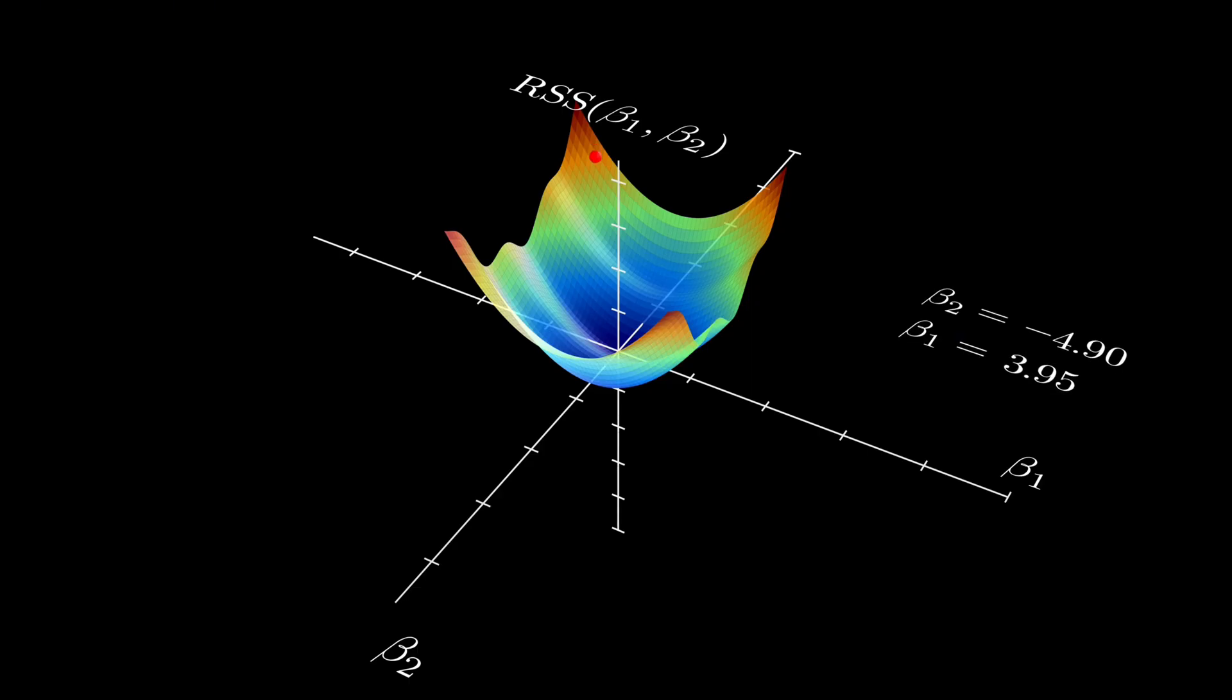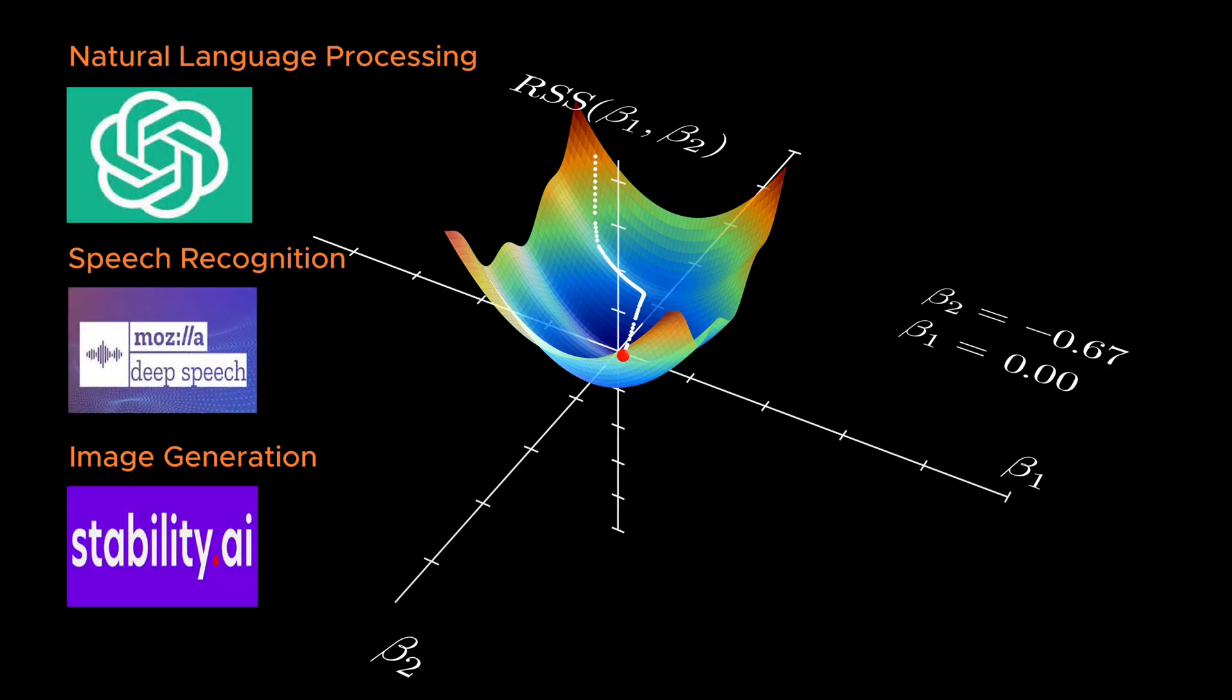What you're seeing is a red dot rolling down a curved surface, seemingly finding its way to the lowest point on the landscape. It may look simple, but this animation illustrates one of the most important methods in all of machine learning and deep learning. This is how machines learn.